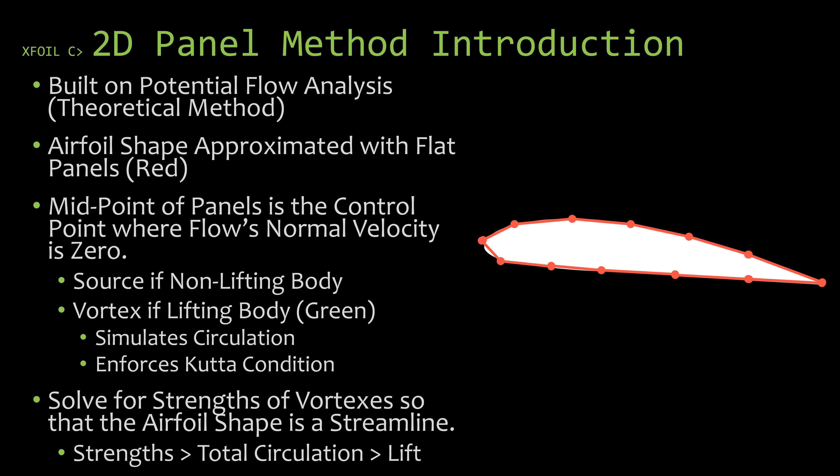One way to get around that — and XFoil has this functionality — is that you can actually change the density of the panels near the leading edge and the trailing edge. So it almost acts like it has more panels, but since it's more dense near the leading edge and trailing edge and less dense in the middle area of the airfoil, you're able to get better results without as much computational time. We'll cover how to change the number of panels and the panel density in a future video.